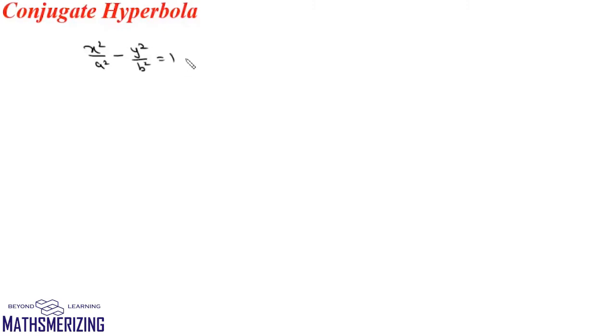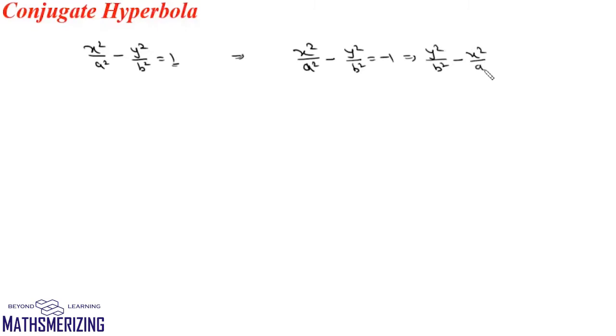There may be some questions on conjugate hyperbolas as well. Suppose we have a hyperbola whose equation is x² / a² - y² / b² = 1. If we replace 1 with -1, we get another hyperbola: x² / a² - y² / b² = -1, which we can also write as y² / b² - x² / a² = 1. These hyperbolas are called conjugate hyperbolas of each other.